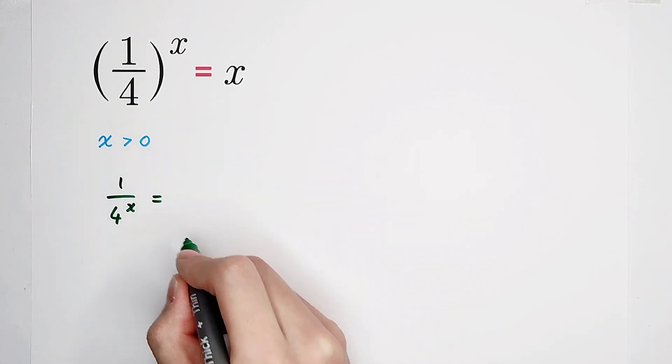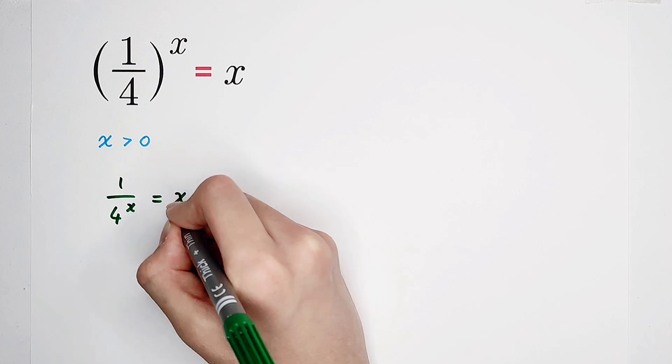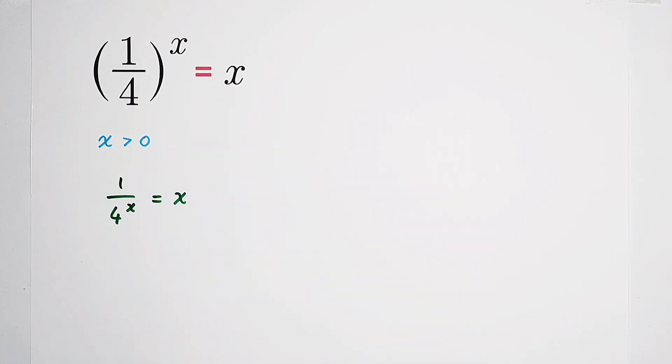And the right-hand side is x. Take the reciprocal on both sides. Four to the power of x equals one over x.